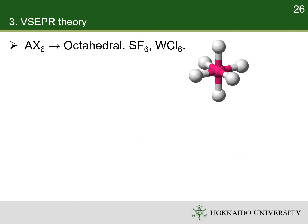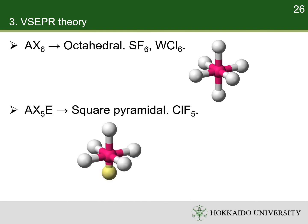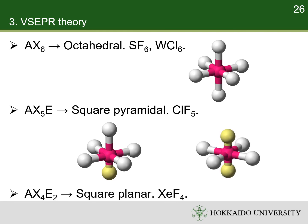AX6 molecules such as sulfur hexafluoride have octahedral shapes. AX5E molecules such as chlorine pentafluoride have square pyramidal shapes. AX4E2 molecules such as xenon tetrafluoride have square planar shapes.